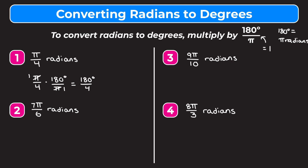So really we have 180 degrees over four, and then we can simplify this by dividing the top and bottom by four. 180 divided by four gives us 45 on the top, four divided by four gives us one on the bottom. So we get that pi over four radians is equal to 45 degrees.